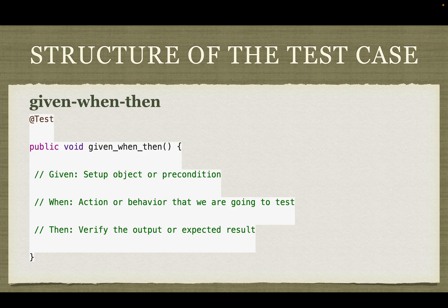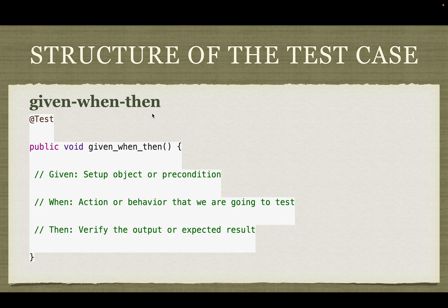There are many ways to write unit test cases. In this code demo we are following the Given-When-Then pattern. This is also one of the interview questions you may encounter: what test case pattern are you following, or what is the structure of your test cases in your organization? Given-When-Then has gained popularity and is being used by most organizations these days. Inside our test case we will have three structures: Given, When, and Then.